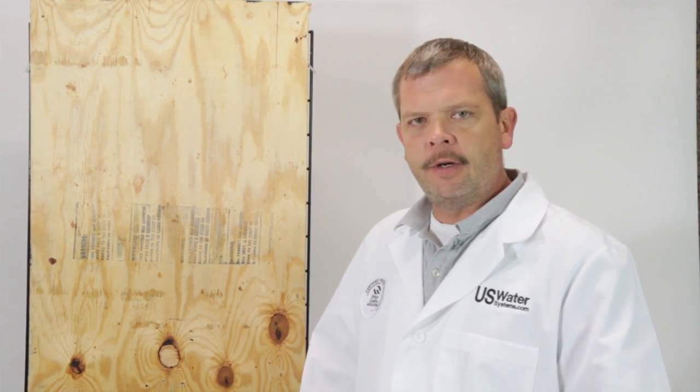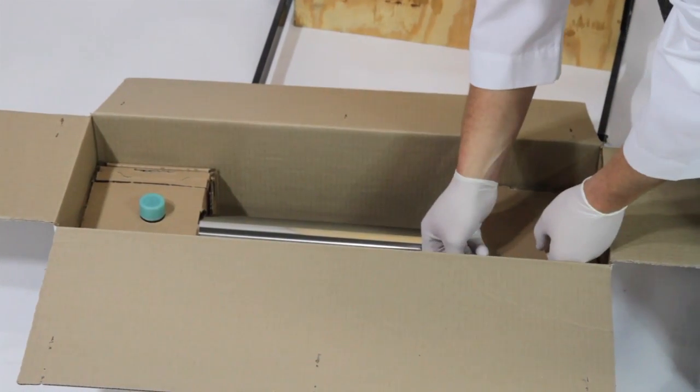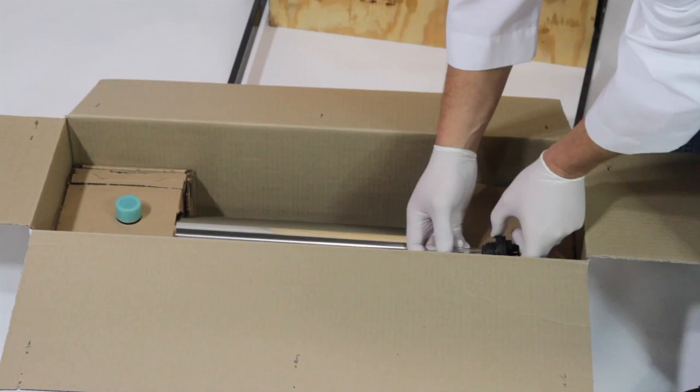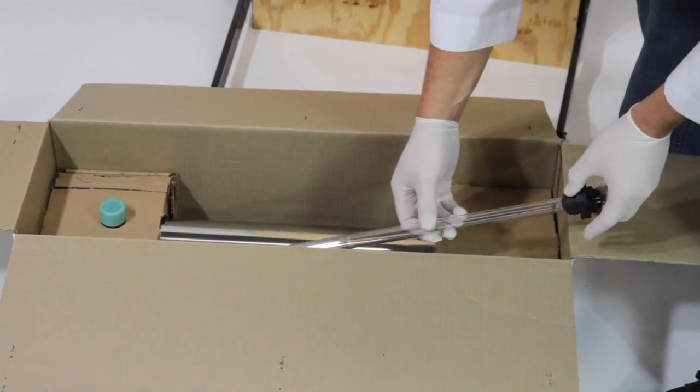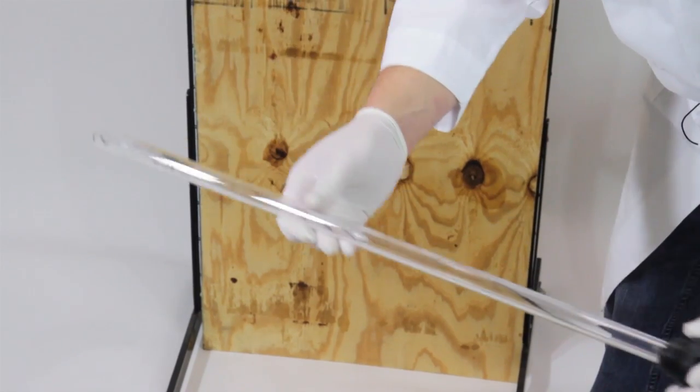The first thing that we want to do is open the box and kind of lay everything out, pull out your instruction manual and the different components. Get some latex gloves and then pull this out of the packaging. Be careful not to break it and then we're going to take both of these items and put them to the side.